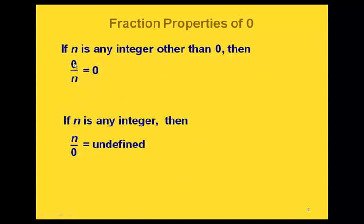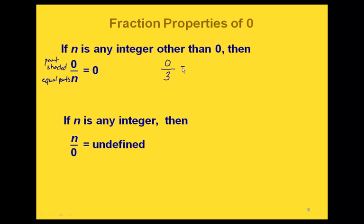For fraction properties involving 0: if we have 0 as our numerator and n as our denominator, the value is just 0. The numerator is the part that's shaded, so with no parts shaded, we get 0. This is true no matter what value is on the bottom, as long as it's not 0. For example, 0 over 3 equals 0, and 0 over 85 also equals 0.